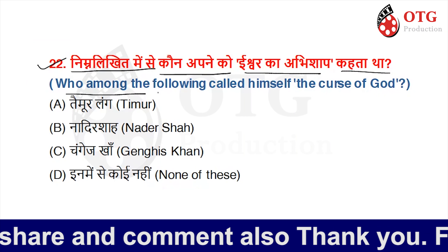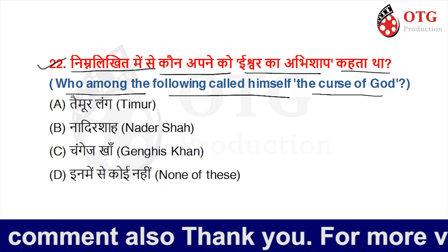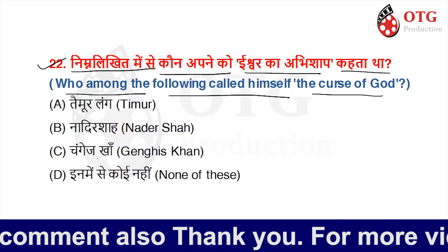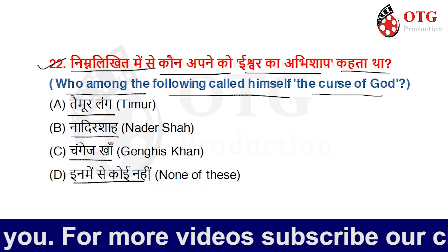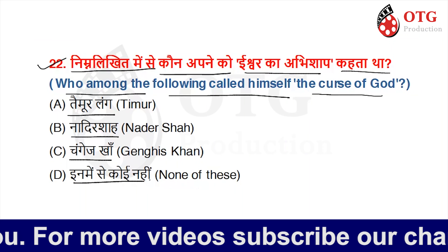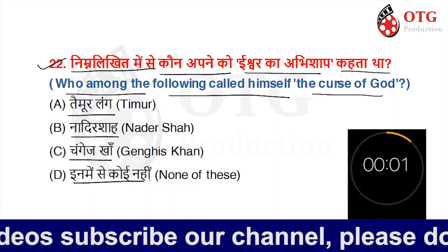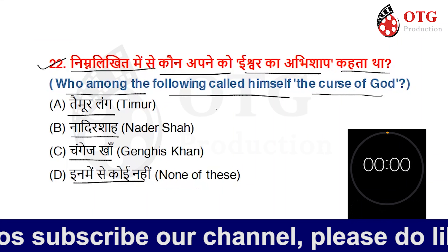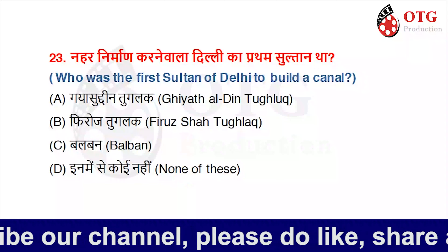Who among the following called himself the curse of God? Option A is Tamerlane, Option B is Nadir Shah, Option C is Changez Khan, and Option D is none of these. Your time starts now. The right option is Option C, Changez Khan.